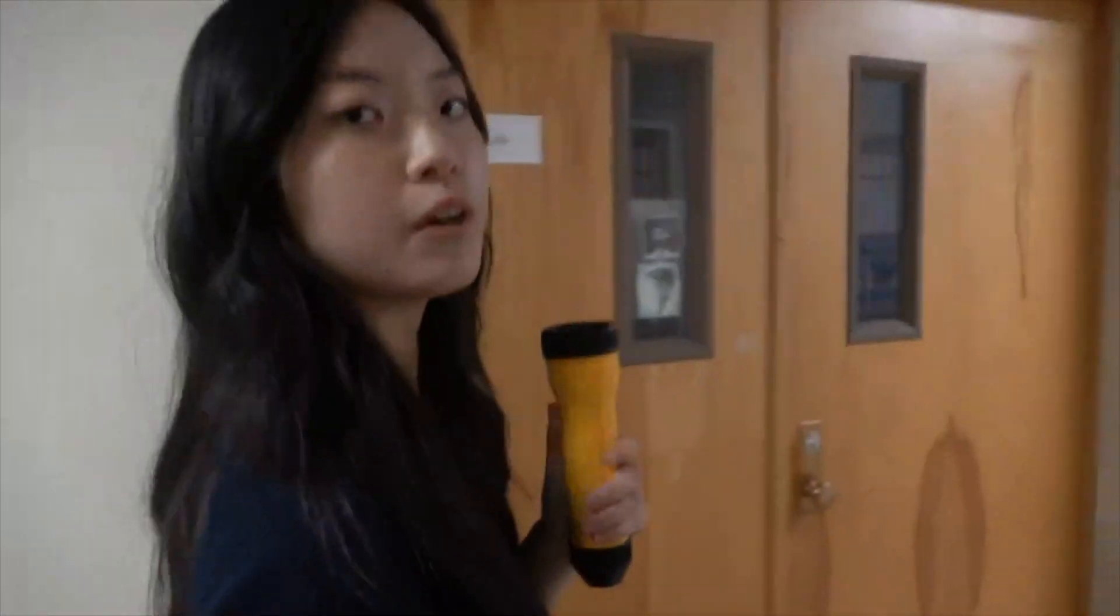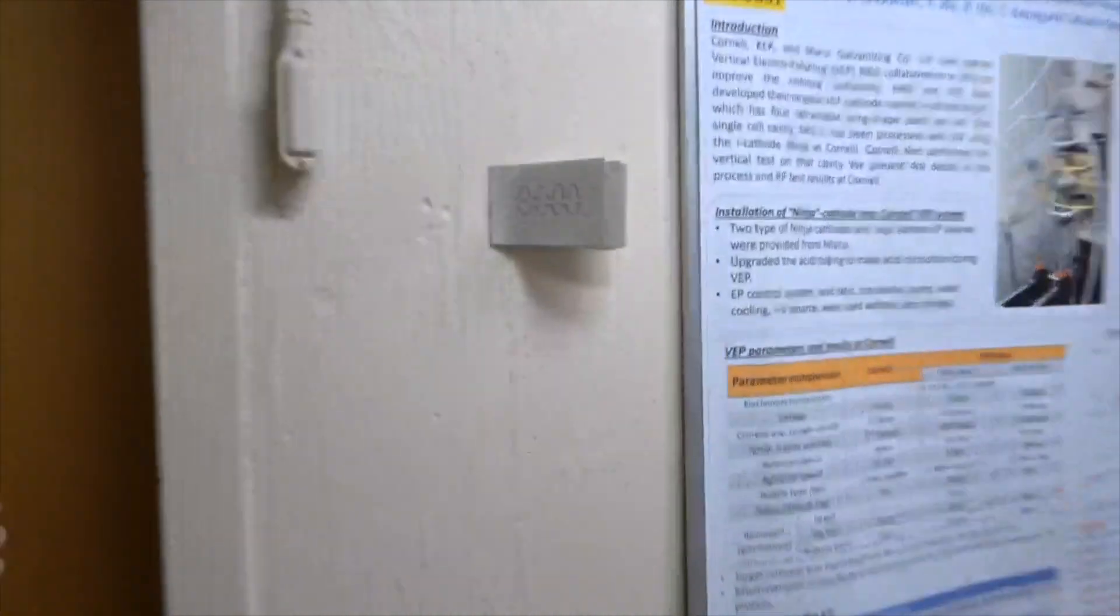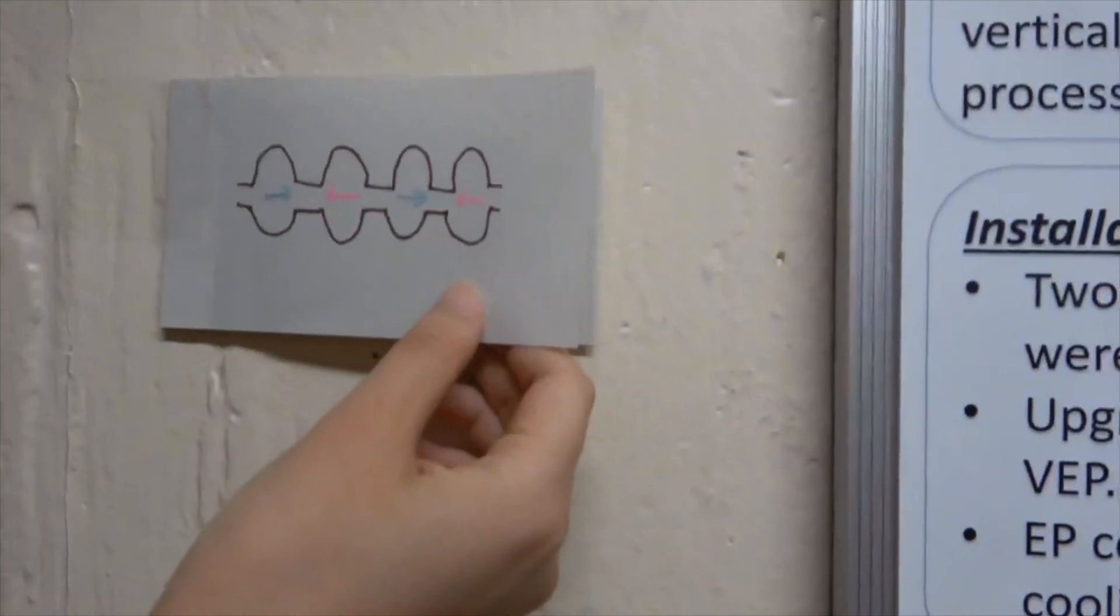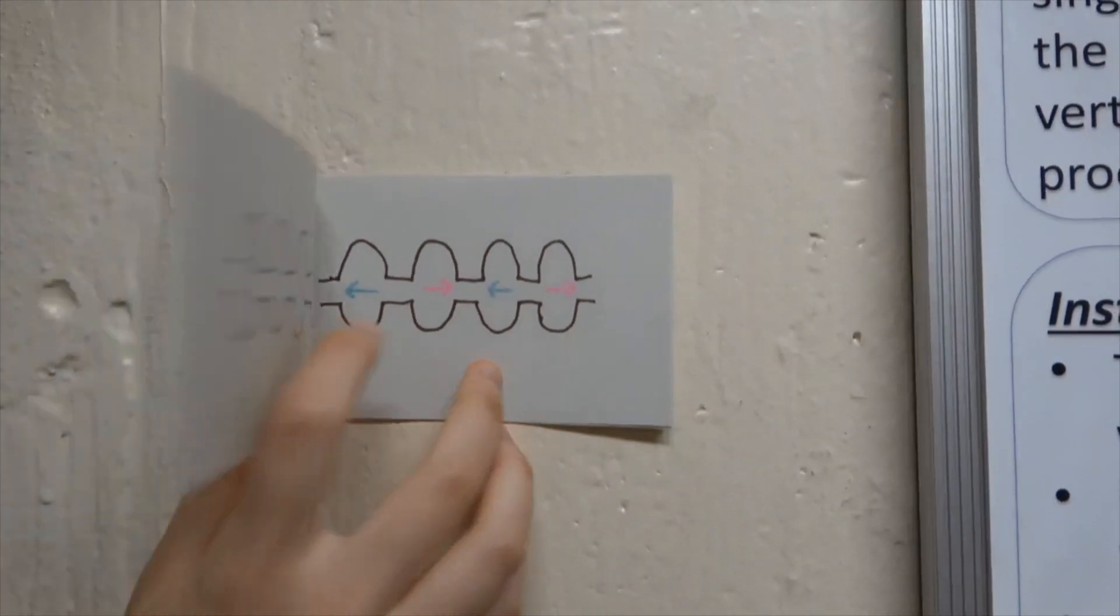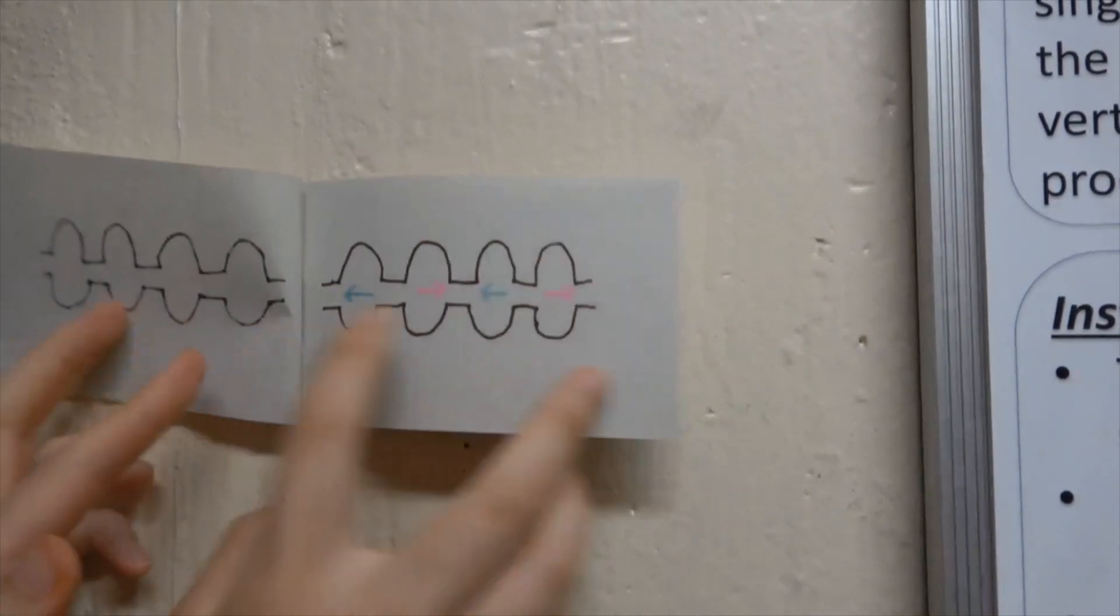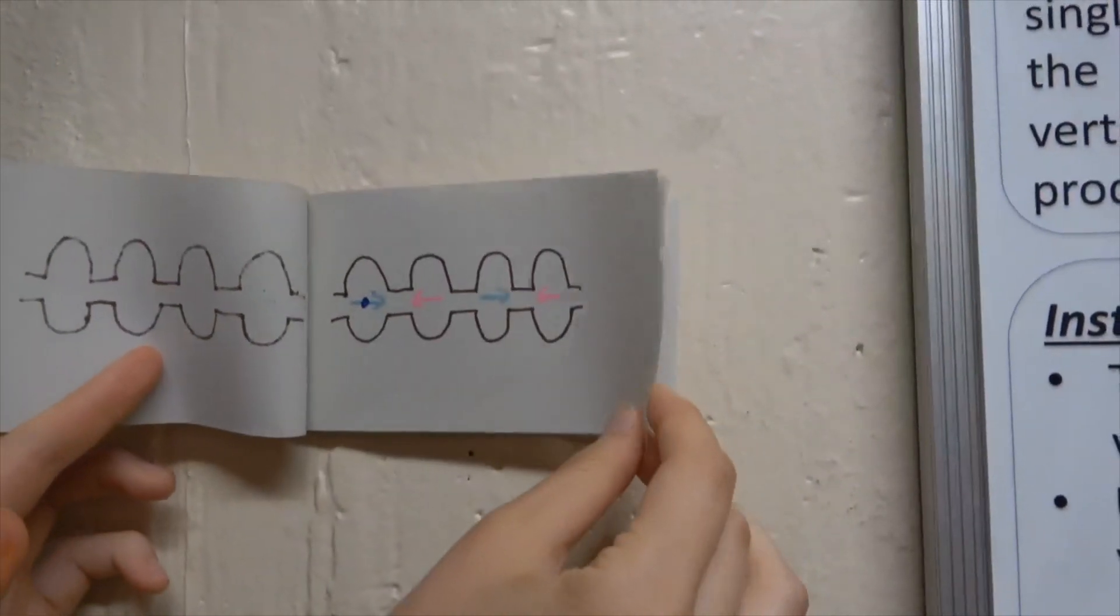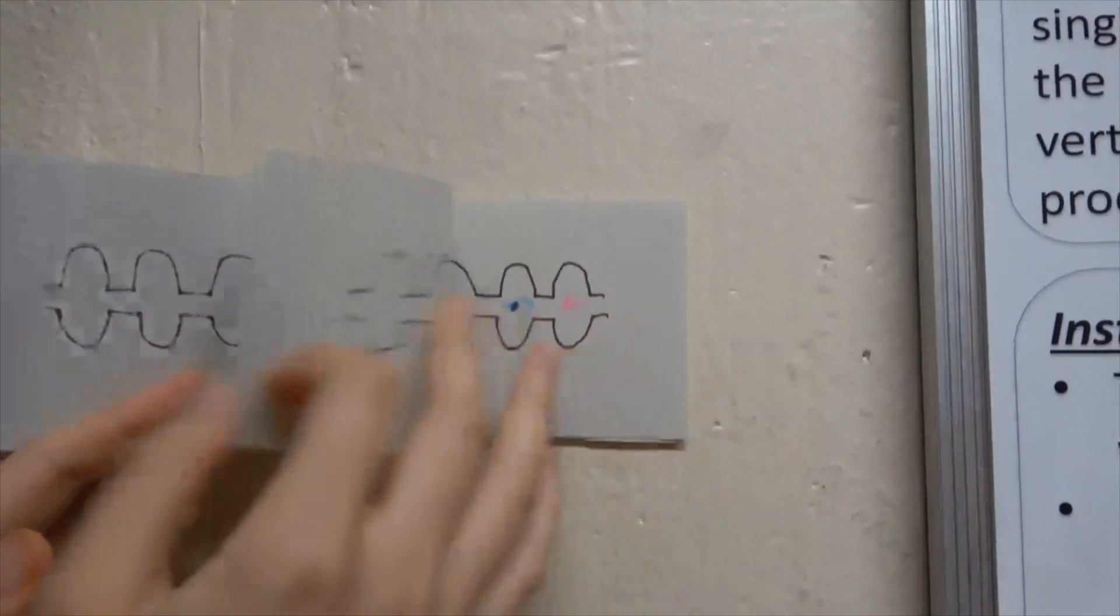The way SRF cavities work is this. You generate an electric field in a row of cavities where the direction goes back and forth. When a particle passes through, it rides the electric field and goes faster.